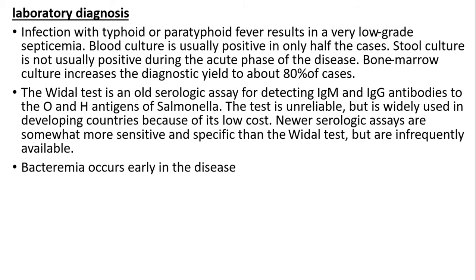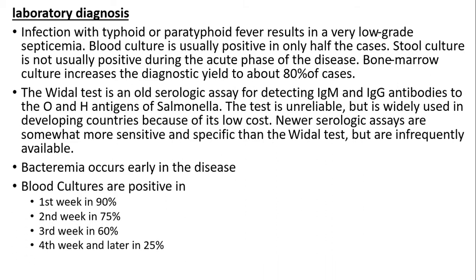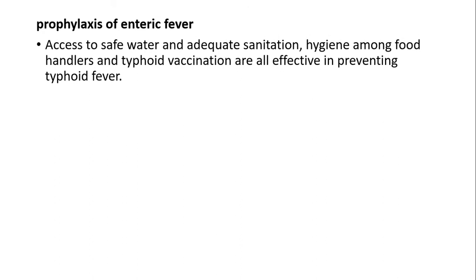Bacteremia occurs early in the disease. Blood cultures are positive in the first week in around 90% of cases, second week around 75%, third week by 60%, and by the fourth week and later it decreases to 25%. Prophylaxis of enteric fever includes access to safe water, sanitation, hygiene among food handlers, and typhoid vaccination, which are effective in preventing typhoid fever.